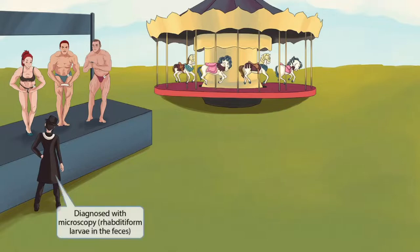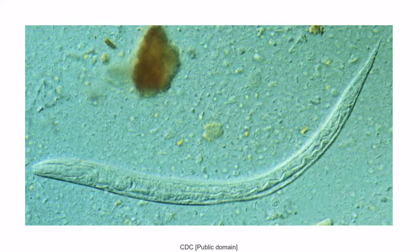If we turn our attention back to the judge, we can see that he's dressed in very traditional rabbi clothing. This happens to be a Jewish bodybuilding contest, so the rabbi is the judge here. Rabbi sounds like rhabditiform, so this should help you remember that Strongyloides stercoralis is diagnosed with microscopy, which reveals rhabditiform larvae in the feces of those infected. The word rhabditiform just refers to the early developmental larval stage of the parasite. This is an image showing a larva of Strongyloides stercoralis, which is what may be seen with microscopy when examining the feces of an infected patient.